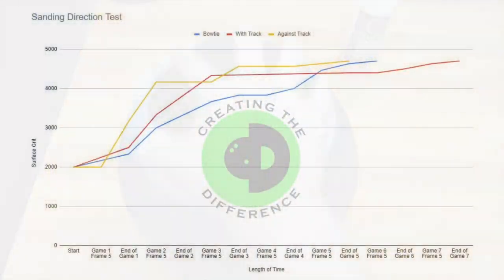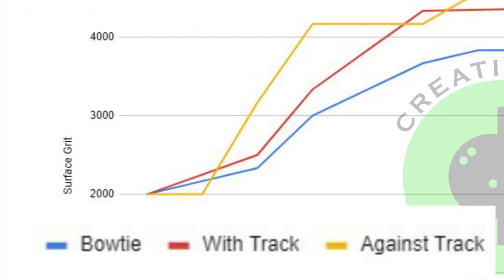So now let's talk about the surface longevity of these different types of sanding methods. All of these bowling balls started at 2,000 grit, and we're going to work in increments of 1,000 to truly get an idea of what is going on with the surface change. You can see the key on screen to know which bowling ball is which. The bowling ball sanded against or perpendicular to the track lasted 6 frames at 2,000 grit, and it was the quickest to reach 3,000 grit.